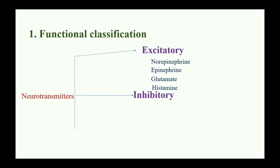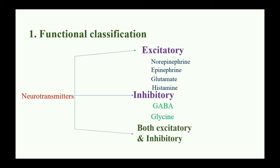Next: inhibitory neurotransmitters. Examples: GABA and glycine. Third category: both excitatory and inhibitory neurotransmitters. Examples: acetylcholine, dopamine, and serotonin.